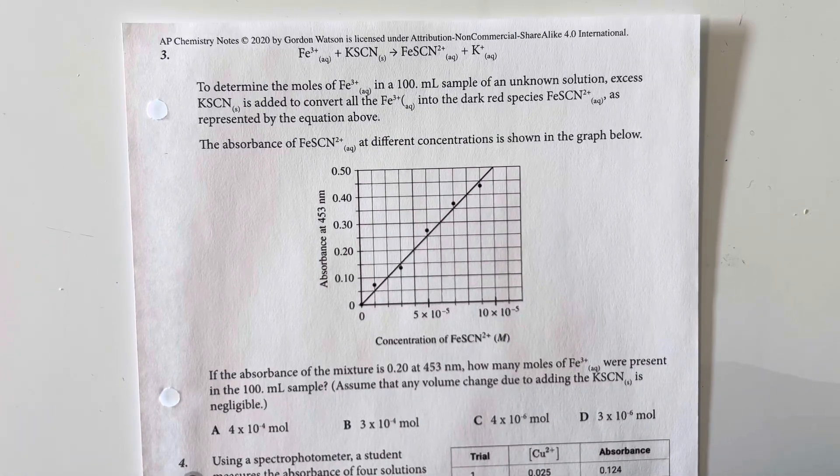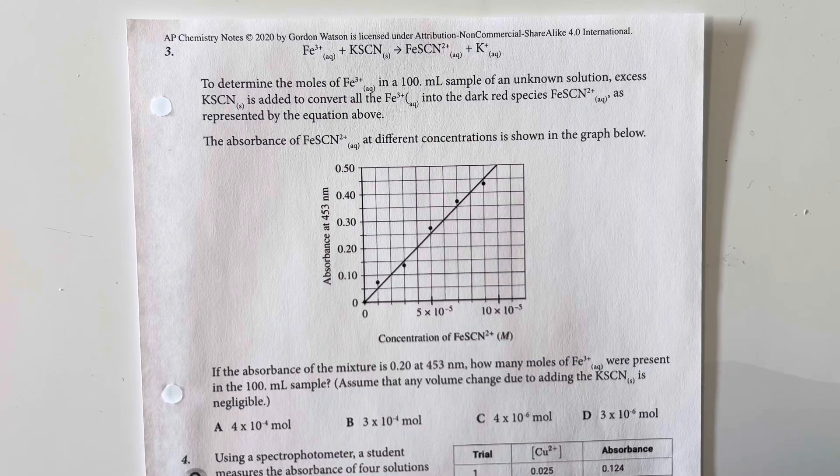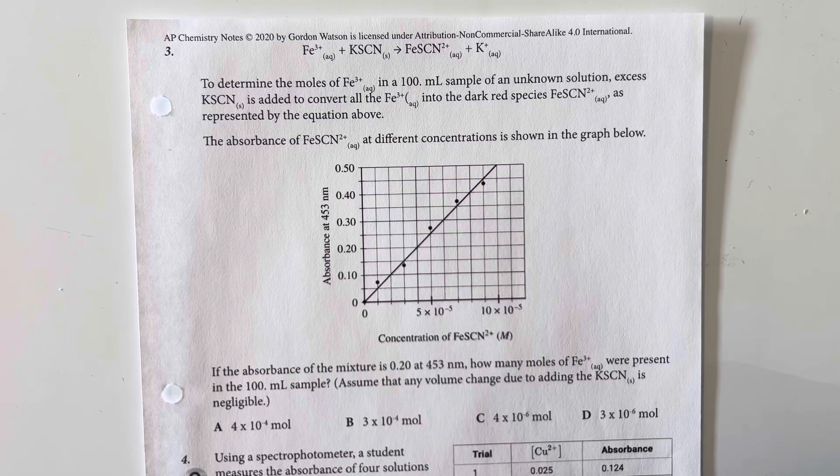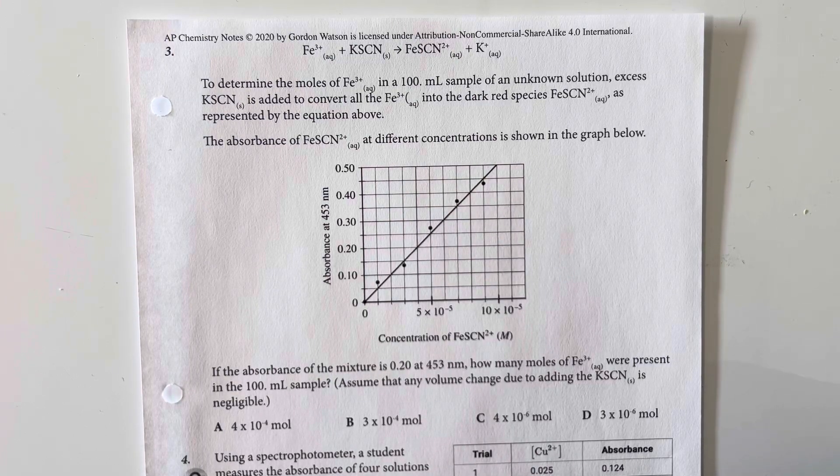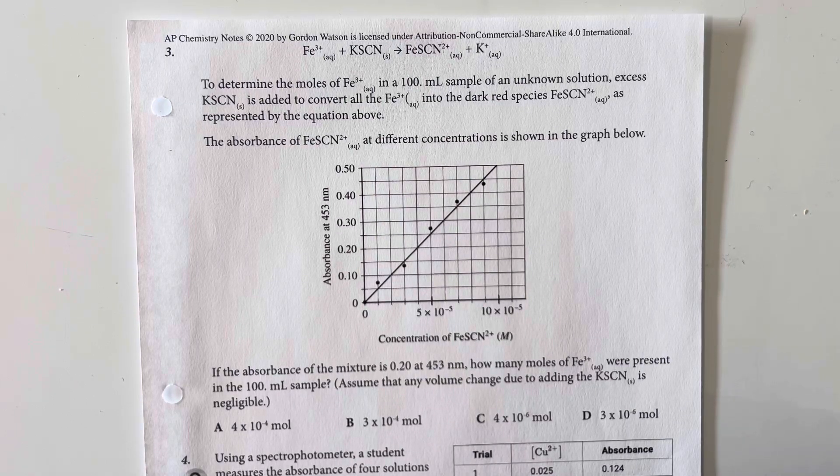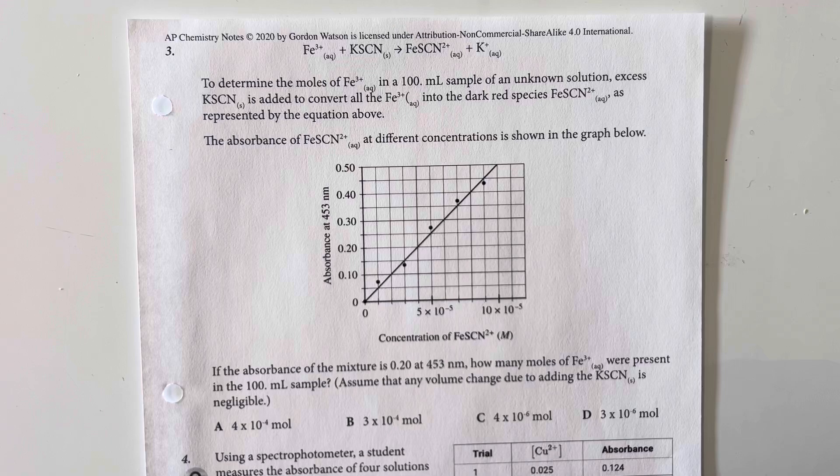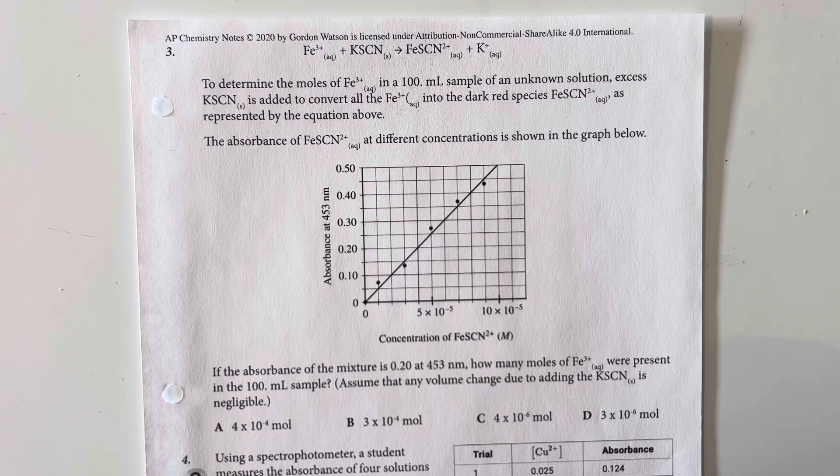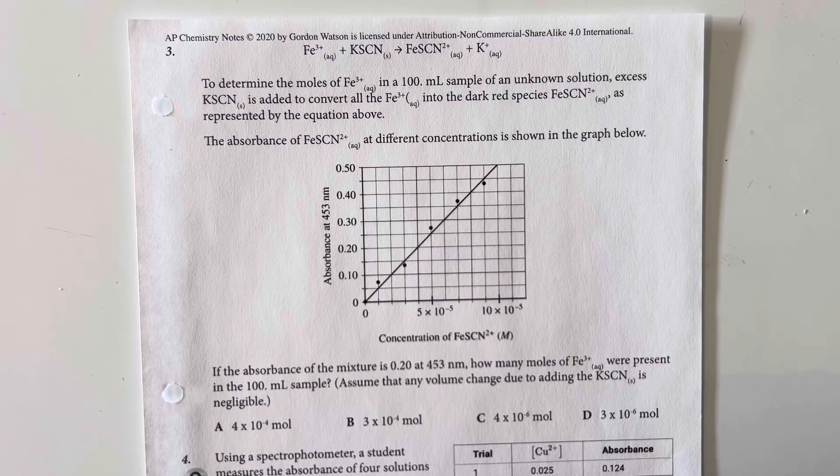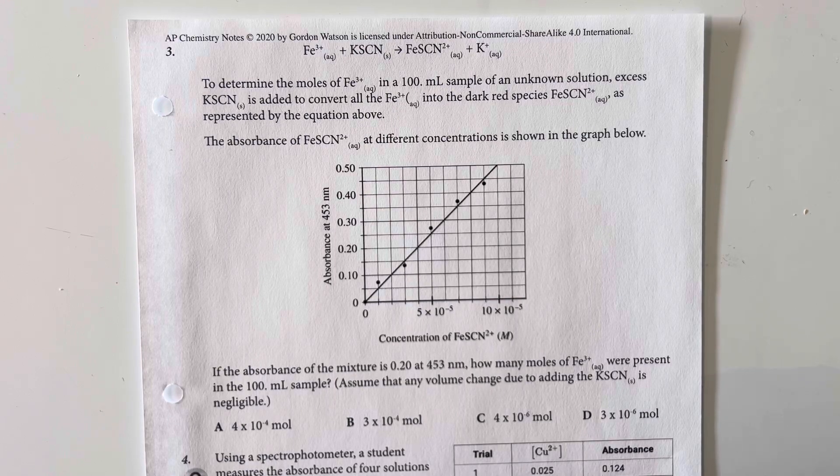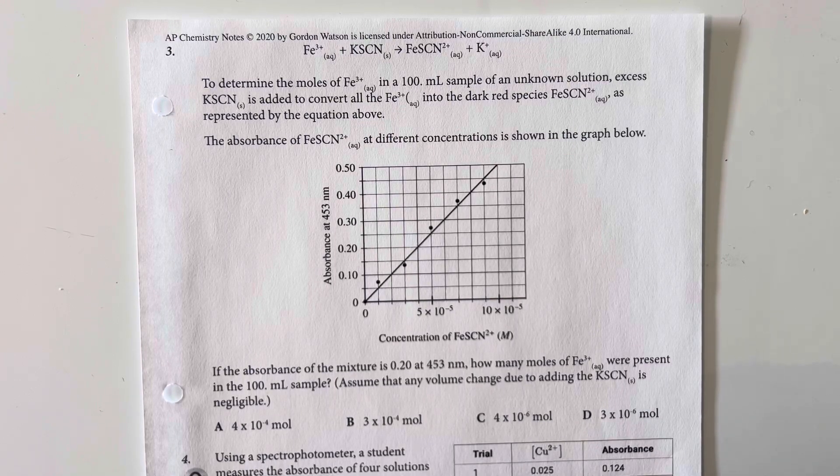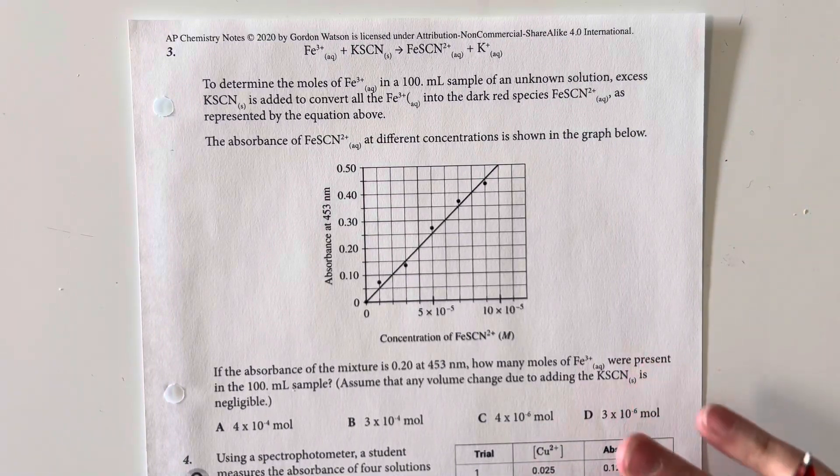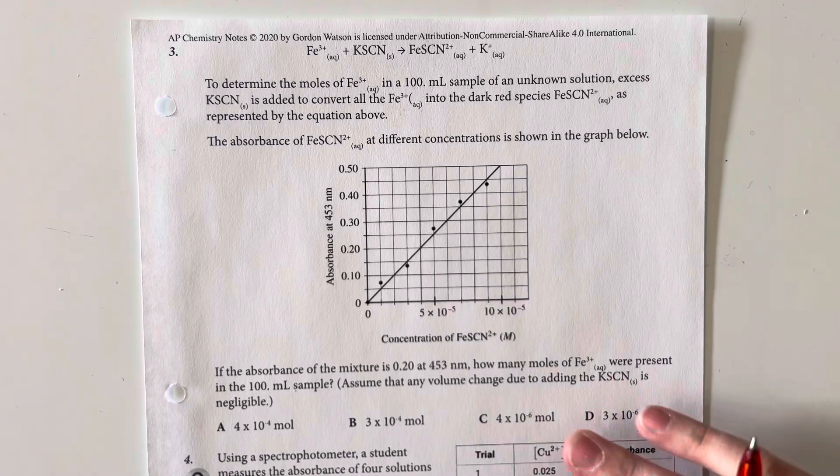We have iron 3 plus, a potassium sulfur and cyanide compound going to the iron sulfur cyanide compound and potassium. To determine the moles of iron 3 in a 100 milliliter sample of an unknown solution excess, potassium sulfur cyanide was added to convert all of the iron 3 into dark species of iron 3 sulfur cyanide as represented by the equation above. The absorbance of the iron sulfur cyanide compound at different concentrations is shown in the graph below.